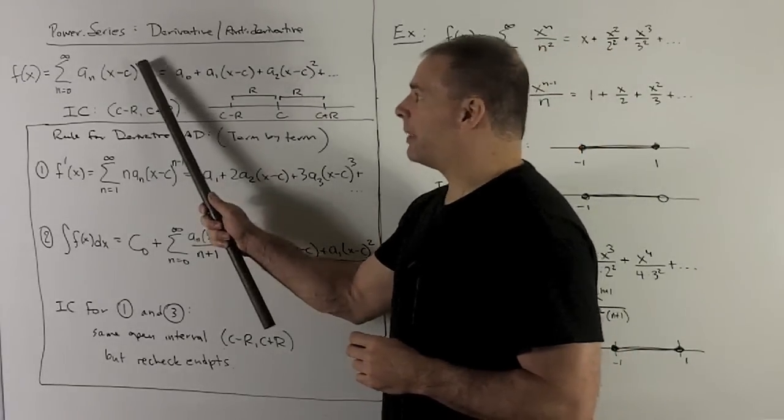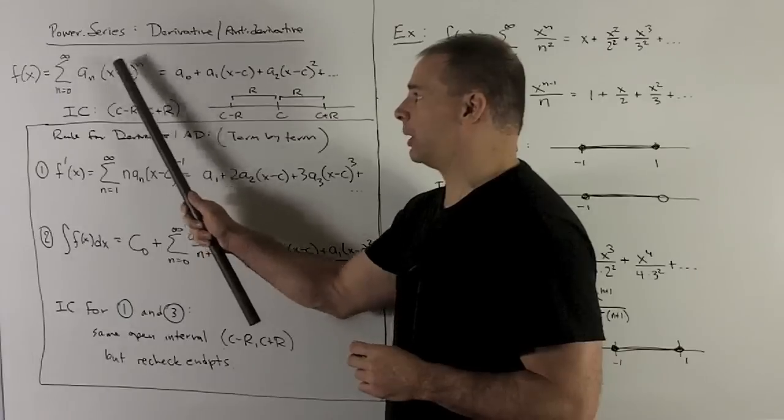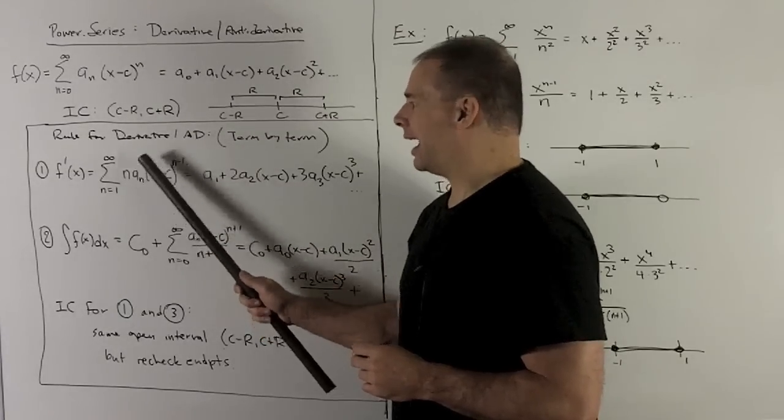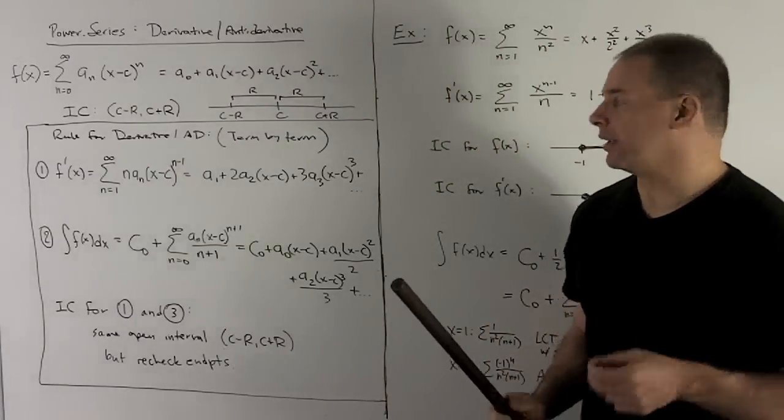We're going to take that n up there, bring it down, subtract one off the exponent, and then derivative of the inside is just going to be one. So we'll get n times a sub n times x minus c to the n minus one power. That's my derivative.